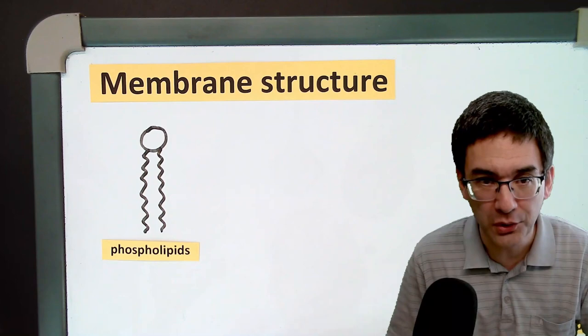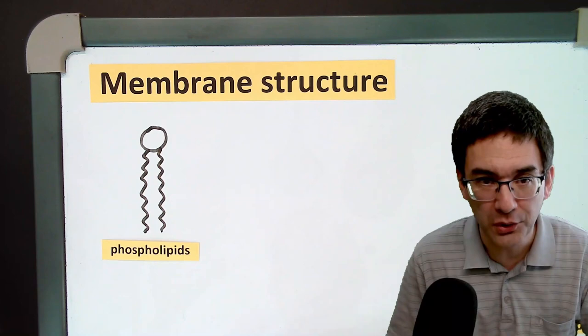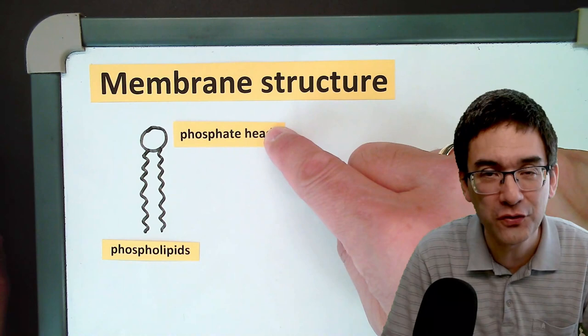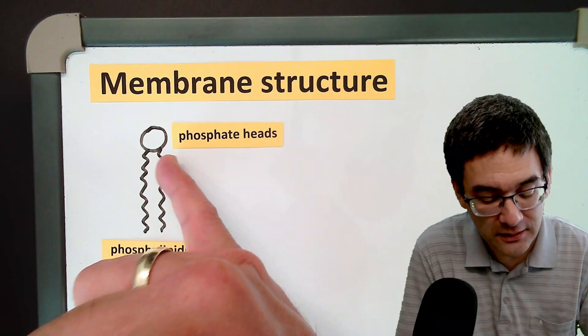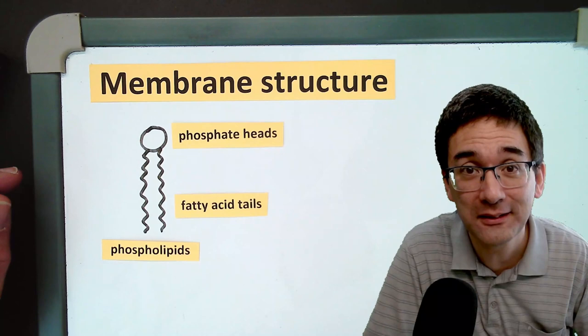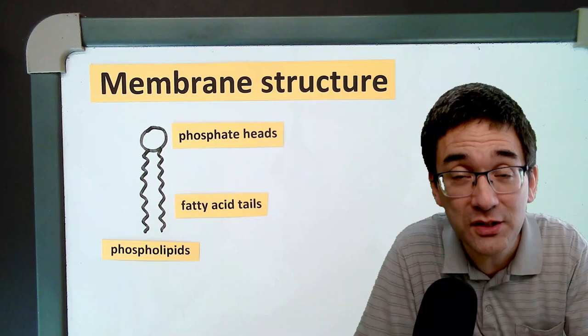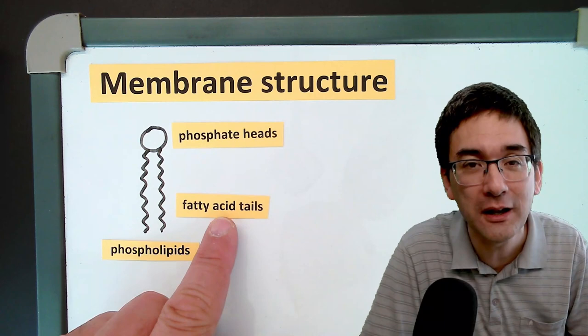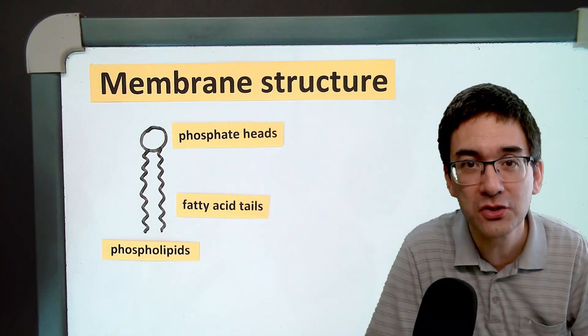The phospholipid is made of two parts. There is a circle up here — we don't call it a circle, we call it a phosphate group — and it's called the phosphate head of the phospholipid. Those two squiggly lines are quite flexible; these are so-called fatty acid tails. Phospholipids are lipids, special kinds of lipids, and because they're lipids they also have fatty acids. But instead of triglycerides which have three fatty acid tails, phospholipids only have two fatty acid tails.